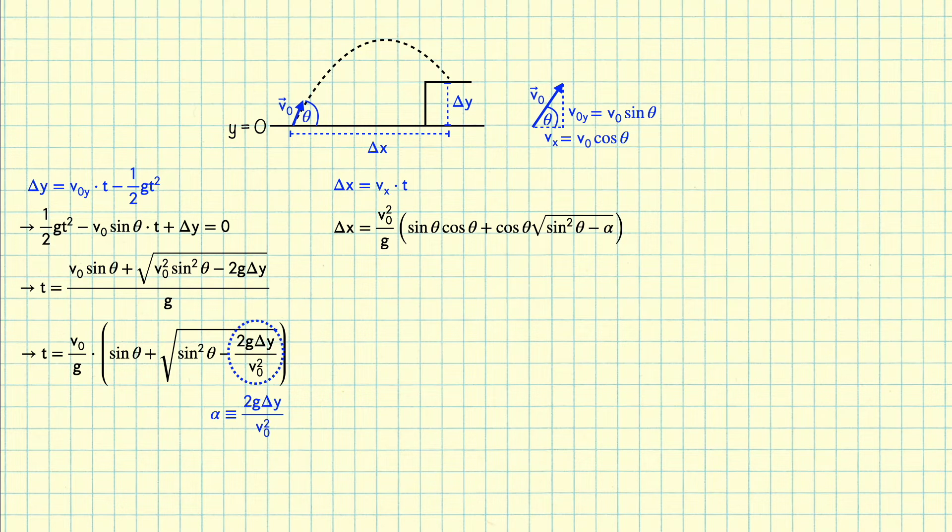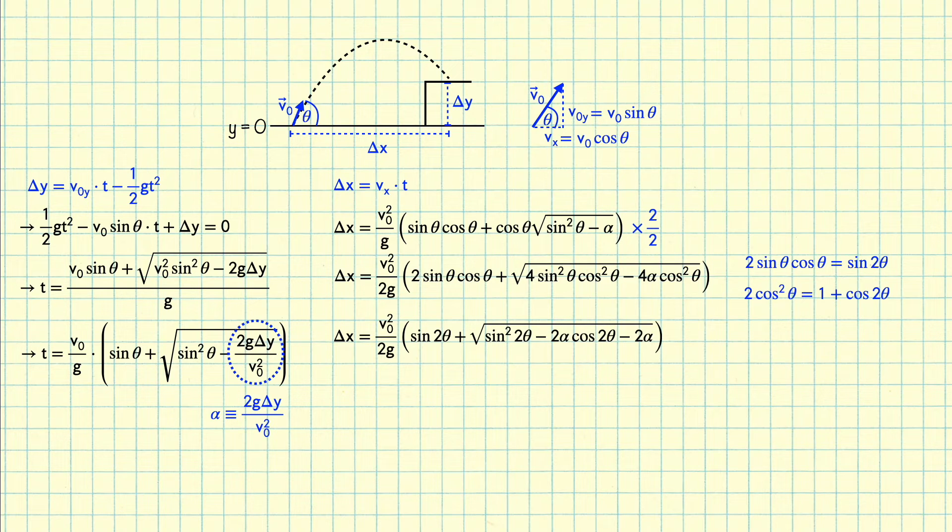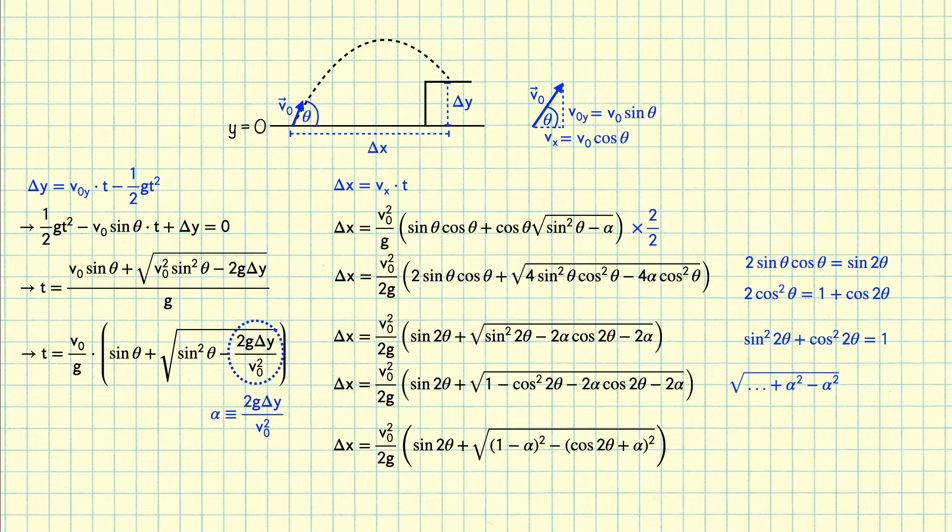Now this expression is a little bit complicated, so I'm going to rework it into a cleaner form using some trig identities. First thing I'm going to do is I'm going to multiply and divide by a factor of 2, and bring one of the factors of 2 inside the parentheses. Now I'm going to make use of the double angle formulas for sine and cosine. I can now substitute these in to get an expression in terms of sines and cosines of 2 theta instead of theta. Now I'm going to get rid of the sine squared 2 theta term inside the square root by using the identity sine squared 2 theta plus cosine squared 2 theta equals 1. Next, I'm going to add and subtract alpha squared inside the square root, and group some terms together to get a nice difference of squares inside the square root.